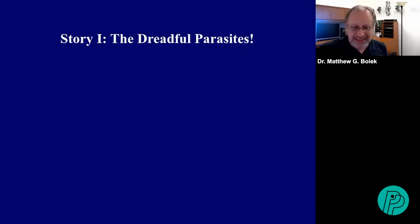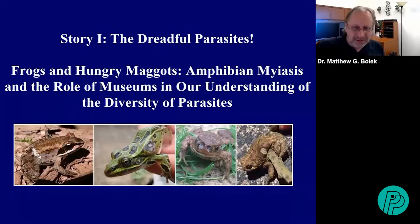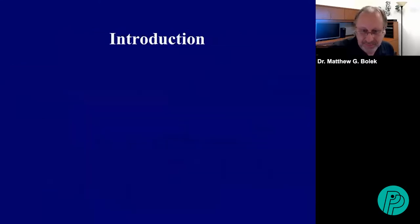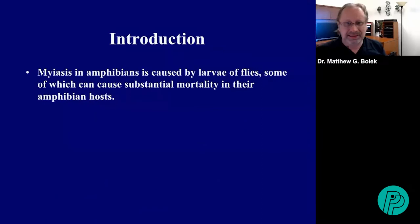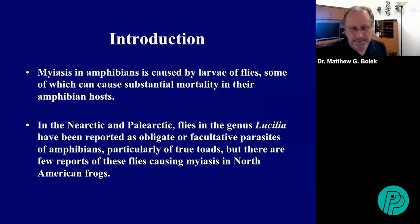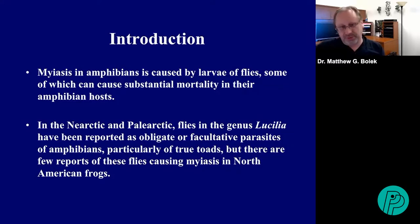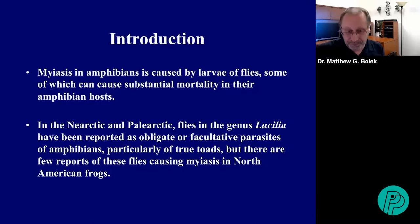Story number one deals with the dreadful parasites, titled 'Frogs and Hungry Maggots: Amphibian Myiasis and the Role of Museums in our Understanding of Diversity of Parasites.' Myiasis in amphibians is caused by larvae of flies, some of which cause substantial mortality in their amphibian host. In the Nearctic and Palearctic regions of the world, flies in the genus Lucilia have been reported as obligate or facultative parasites of amphibians, particularly of true toads. There are very few reports of these flies causing myiasis in North American frogs and toads.